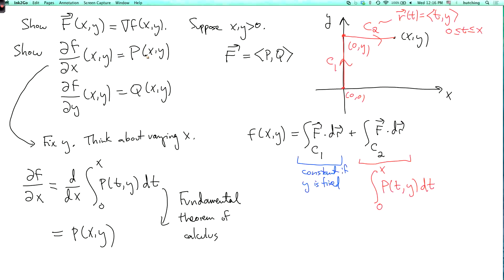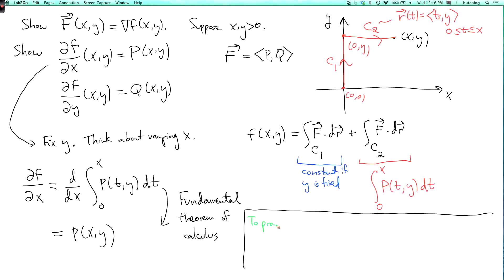To prove the other equation, df/dy equals q, it's similar, so I won't do the whole thing. You fix x and vary y. For this purpose, it's useful to calculate lowercase f using a curve that first goes to the point (x, 0) and then goes up to (x, y). When you integrate over the first part, you get a constant when x is fixed. When you integrate over the second part, you get something depending on y, and its derivative with respect to y will be q.